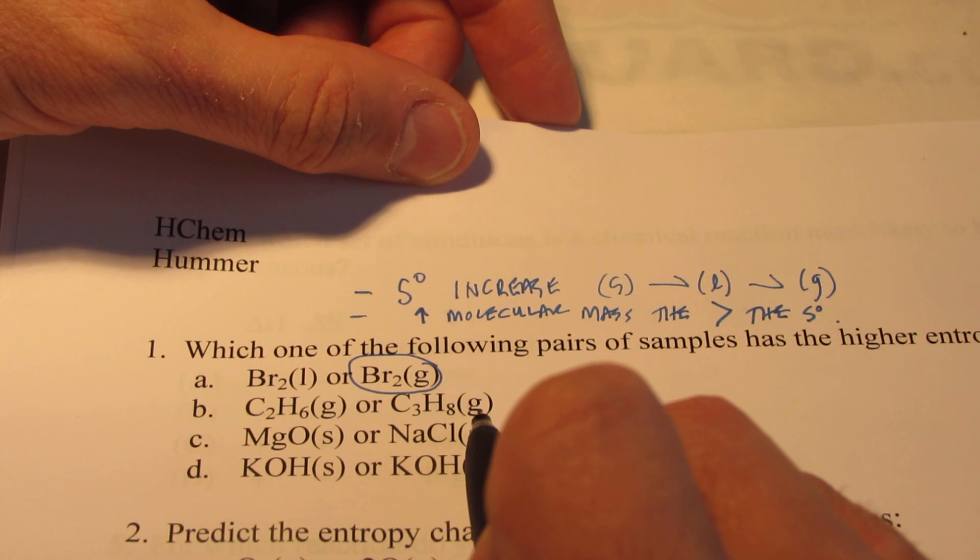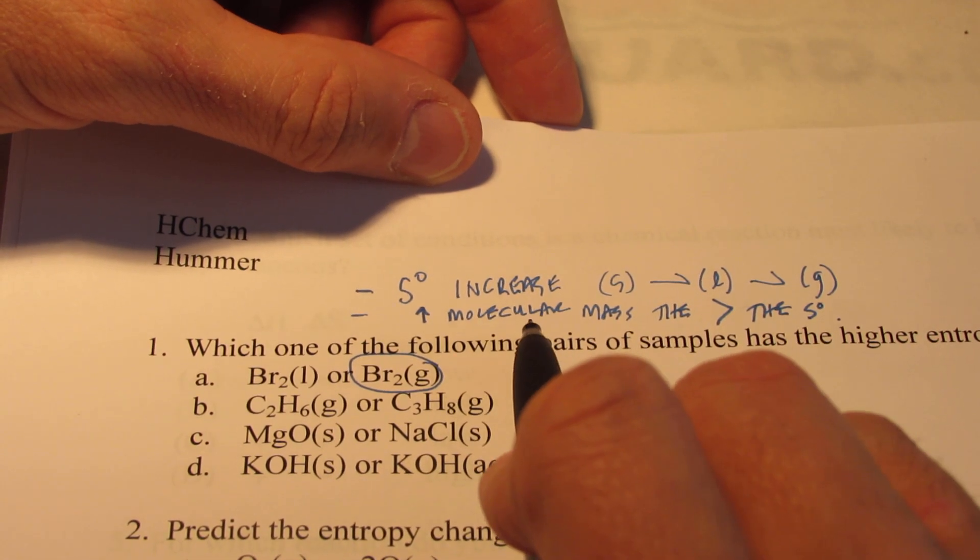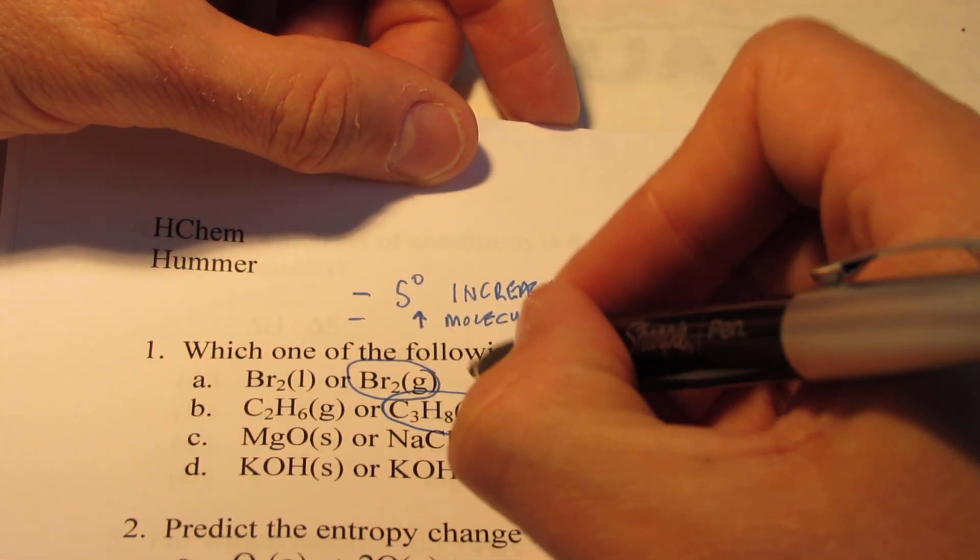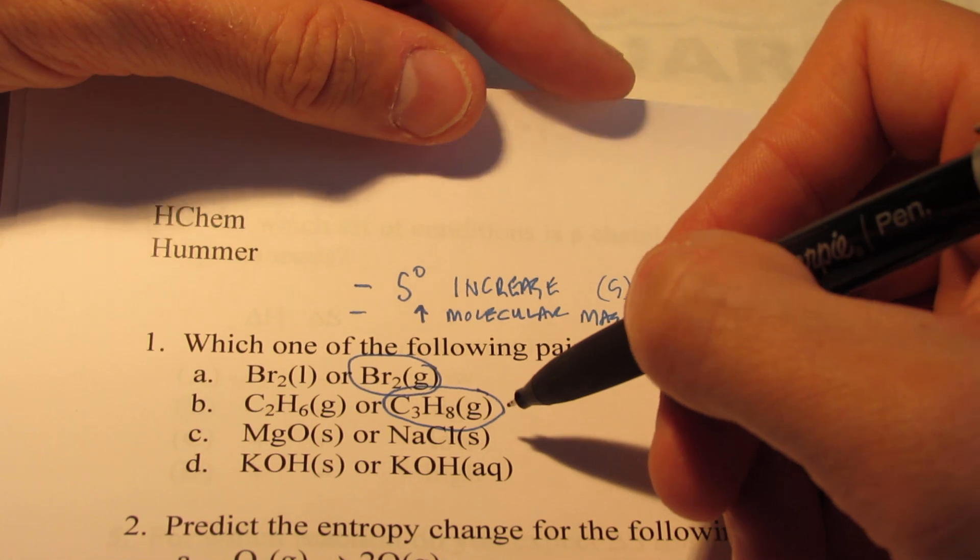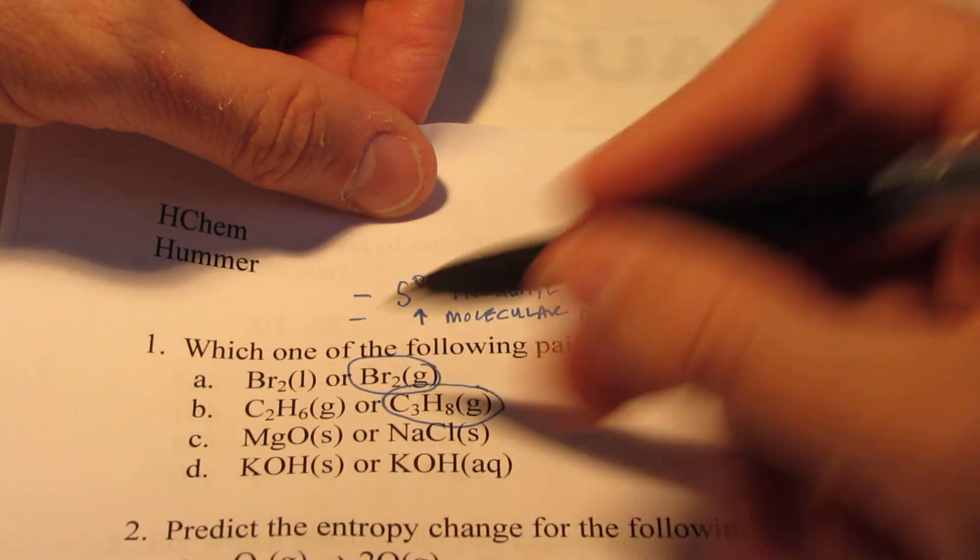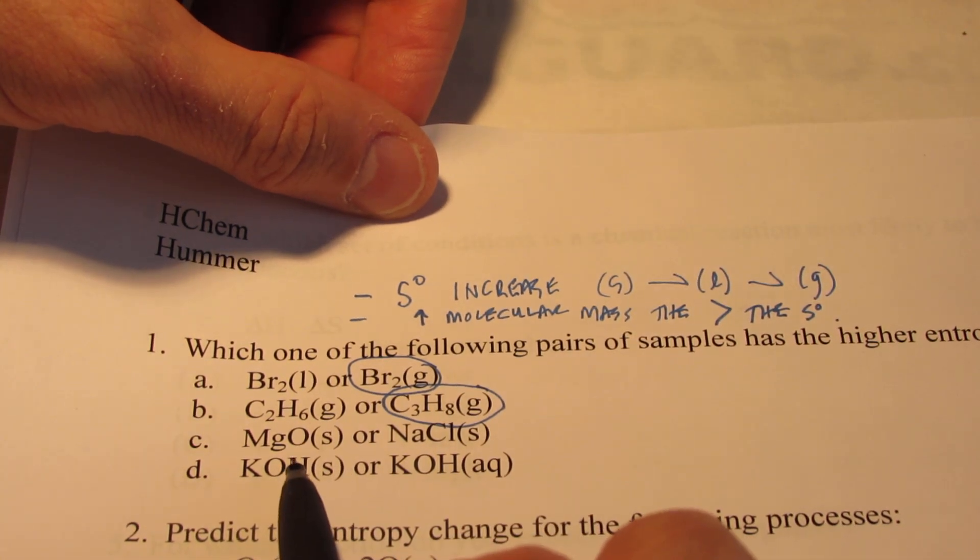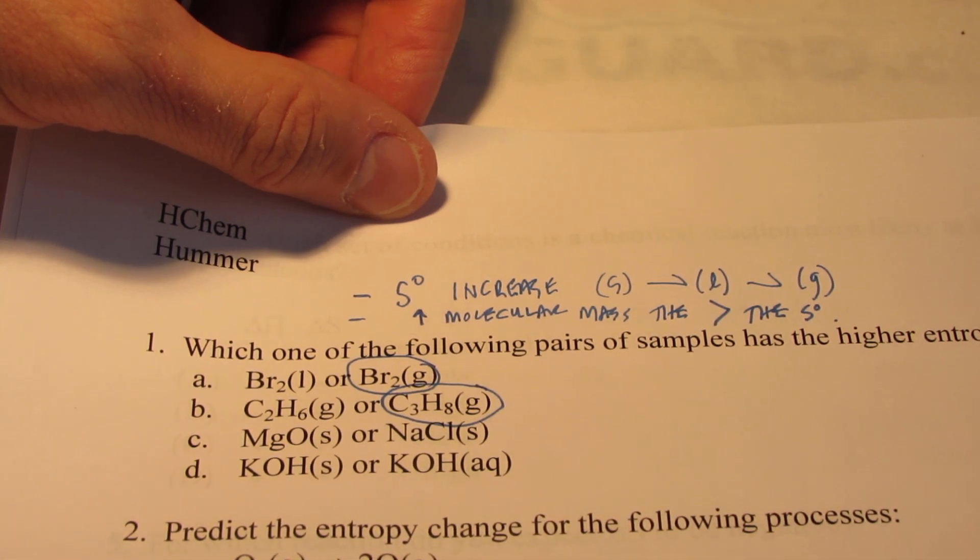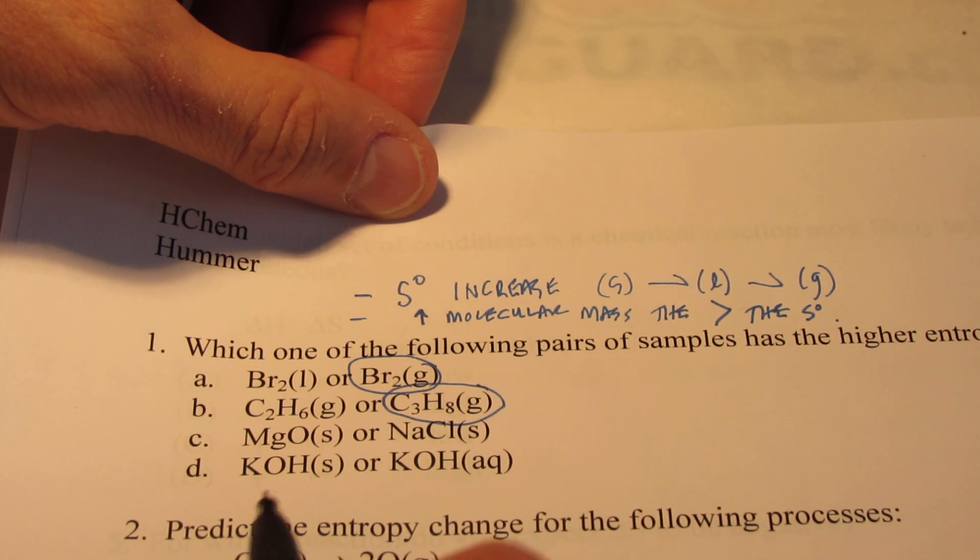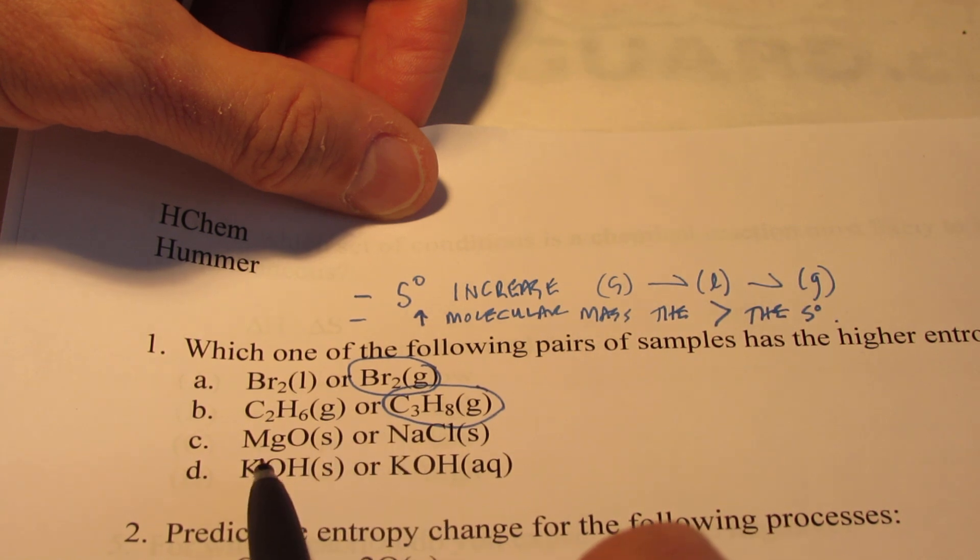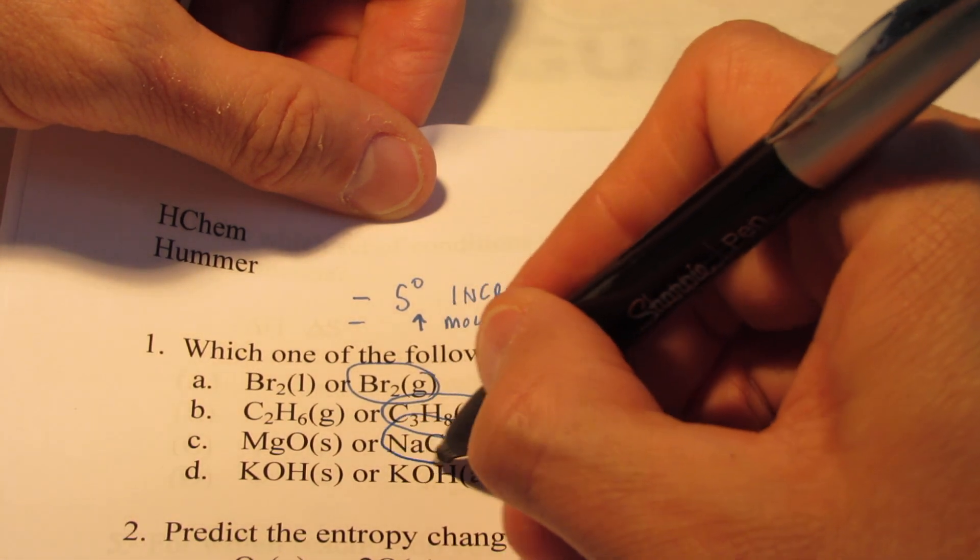We have two gases to worry about here. So they're in the same phase. I'm going to pick the one with the larger molecular weight. So C3H8 is a larger molecule than C2H6. There are more arrangements for that molecule that are possible, so it has a greater degree of disorder than the smaller molecule. MgO solid or NaCl solid. Once again, these are both solids. So once again, I would compare their molecular weights. And I know that sodium chloride has a molecular weight of about 58.5 grams per mole. Magnesium oxide, oh, it's about 40 grams per mole. So we're going to go with sodium chloride.